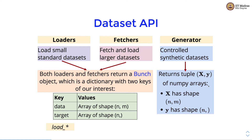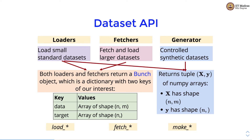Loader functions generally start with load_. Fetcher functions start with fetch_, and generators start with make_. Loaders and fetchers can also return tuples if we set the return_x_y argument of the loader or fetcher function to true.